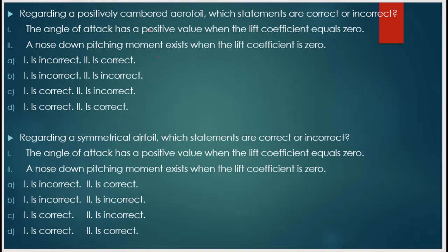Next question: regarding a positively cambered airfoil, which statements are correct or incorrect? Statement one: the angle of attack has a positive value when the lift coefficient is equal to zero. This is incorrect — if the angle of attack is positive, there will be a lift coefficient, but here the lift coefficient is given as zero. So this statement is incorrect.